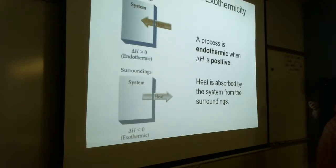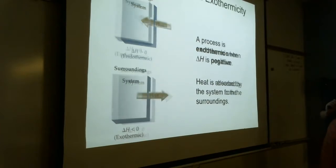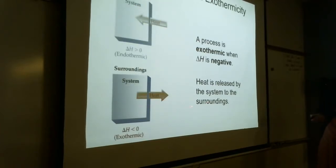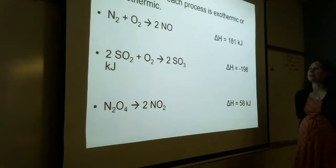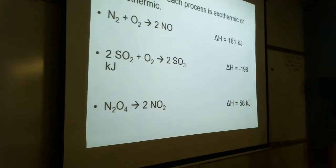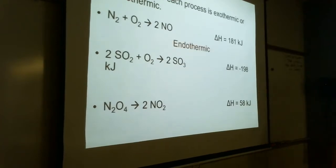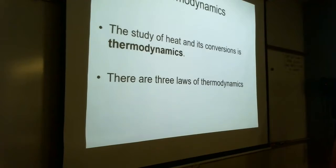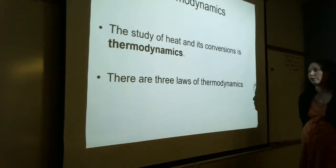Let's review: endothermic reactions have a positive delta H — heat enters the system. Exothermic reactions have heat exiting the system — delta H is negative. Looking at three reactions with given delta H values: the first is endothermic, the second is exothermic. The study of heat and its conversions is called thermodynamics — you can take entire courses on this at undergraduate and graduate levels.